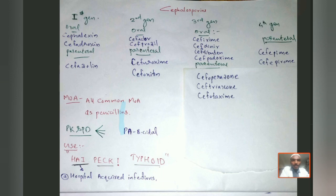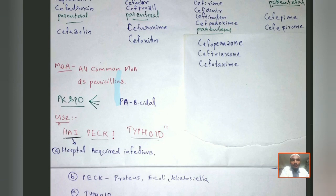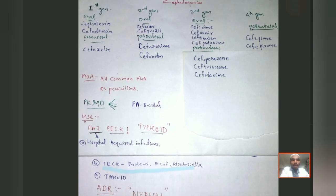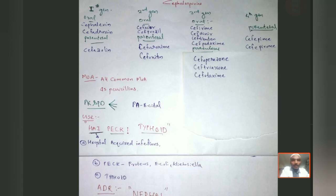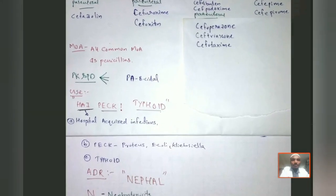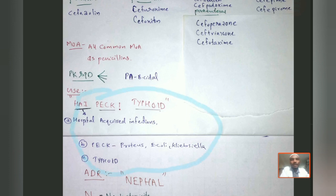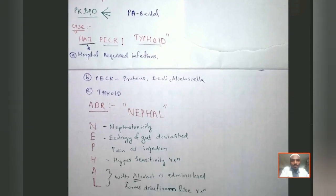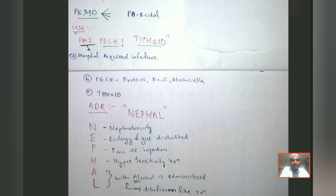The mnemonic for remembering the uses of cephalosporins is HIGH PEC TYPHOID. 'HIGH' stands for hospital-acquired infections. 'PEC' stands for Proteus, E. coli, and Klebsiella — which are common UTI bacteria. 'TYPHOID' refers to typhoid fever. So the uses are hospital-acquired infections, UTIs caused by Proteus, E. coli, and Klebsiella, and typhoid.